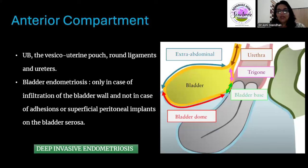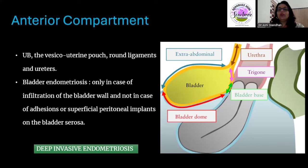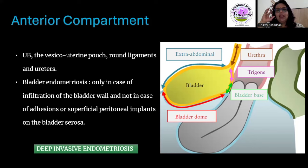Coming compartment-wise, in the bladder we look at the different areas: the urethra, the trigone where the ureters join, the bladder base, the dome, and the extra-peritoneal part. Deep endometriotic deposits are what we pick up in the anterior, posterior, and middle compartments. They are universally seen as either hypoechoic irregular areas or areas of smudged heterogeneity.